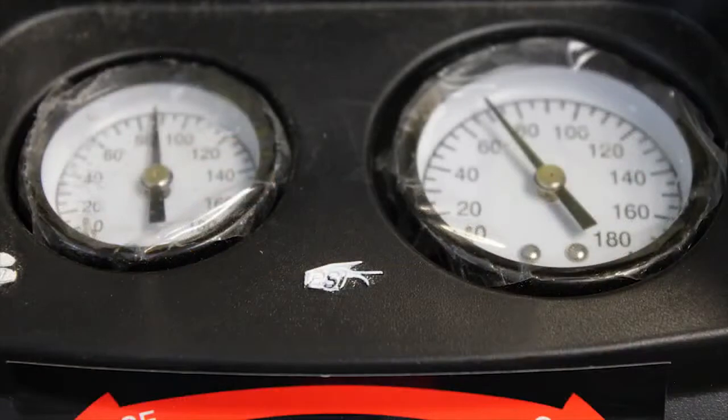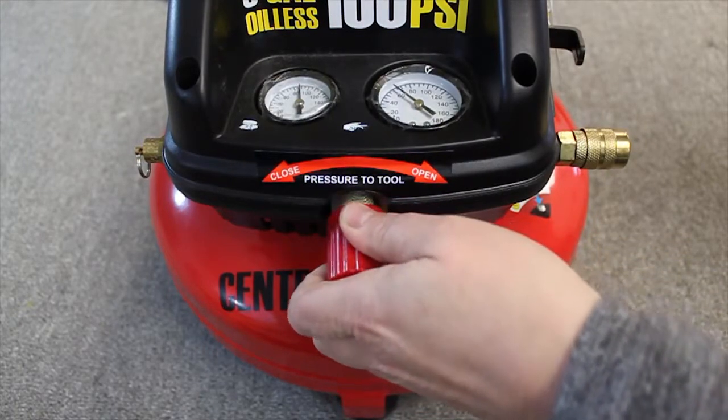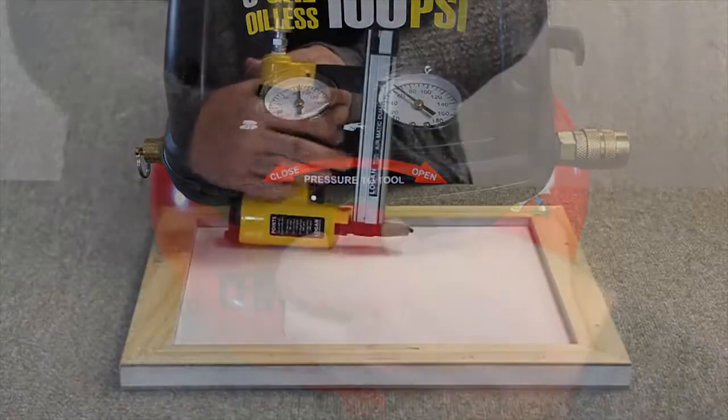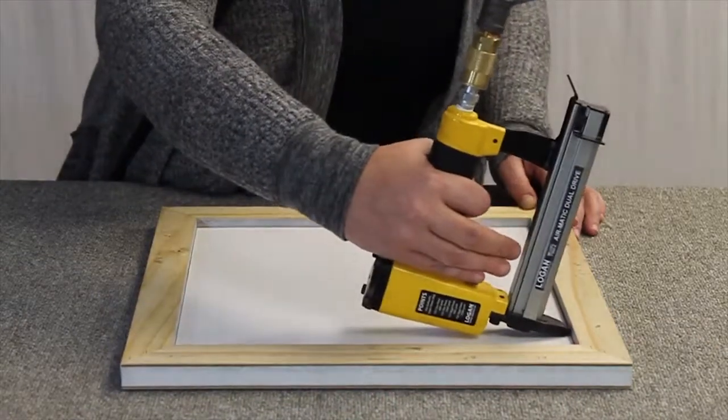Adjust your compressor's PSI to between 50 and 100 pounds maximum. The harder the wood being used, the higher the PSI needed, but do not exceed 100 pounds. To operate the Airmatic Dual Drive, hold upside down and place the